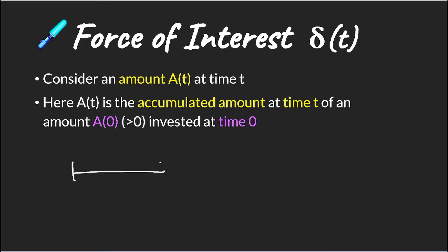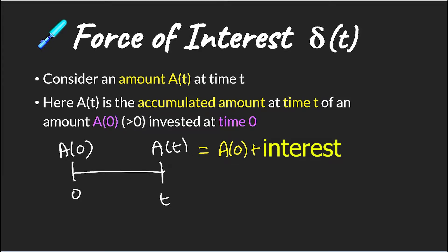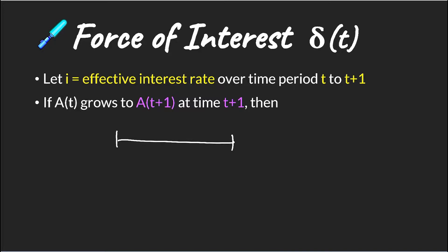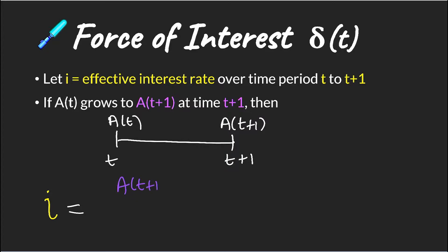We start by considering an amount a(t) at time t, and we know this is the accumulated amount of our initial value a(0) which we invested at time zero. So a(t) is in fact a(0) plus some interest earned along the way. We can see that we have an accumulation factor here which is a(t) over a(0), and this is our accumulation factor as it applies from time zero to t. Building on this, if a(t) grows to a(t+1) over the period from t to t+1 using an effective rate i, then our effective interest rate equals a(t+1) minus a(t), divided by a(t).